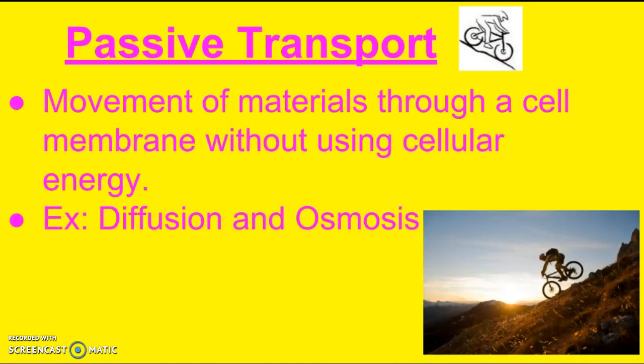There are a couple of different ways. The first one we're going to talk about is passive transport. This is when movement of materials through a cell membrane happens without the use of cellular energy. So the cells don't have to use up any of their precious energy to move things in and out. Some examples are diffusion and osmosis — these are types of passive transport that we'll talk about a little bit more.